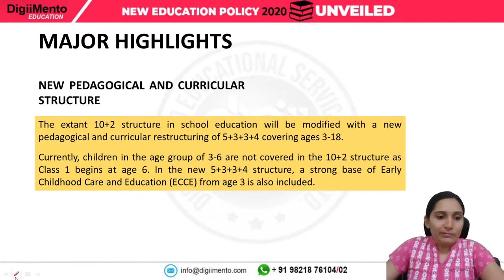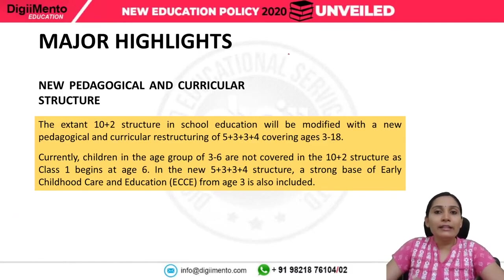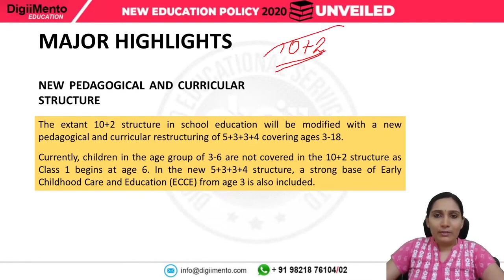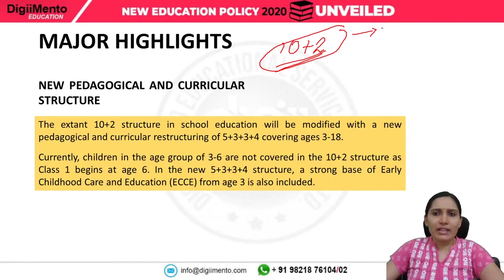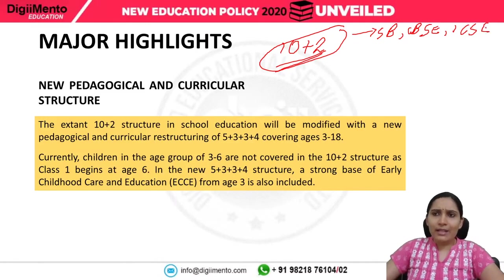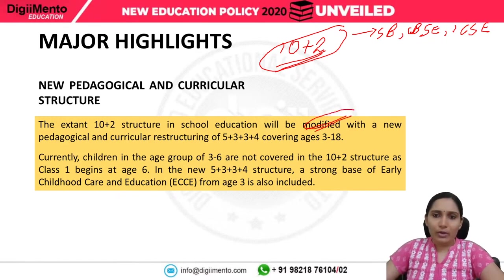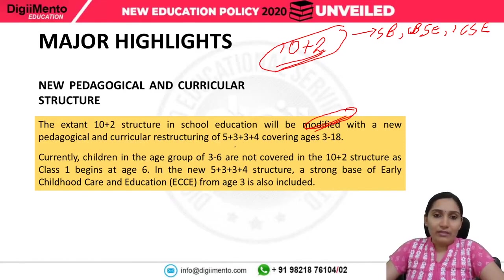The first point is about the new pedagogical and curricular structure. Until now, the curriculum we follow is called 10+2 — ten standards of basic schooling up to matriculation, plus two years of senior secondary (Class 11 and 12), which can be from a state board, CBSE, or ICSE syllabus. A modification has been recommended: the new pedagogical and curricular restructuring will now be 5+3+3+4.